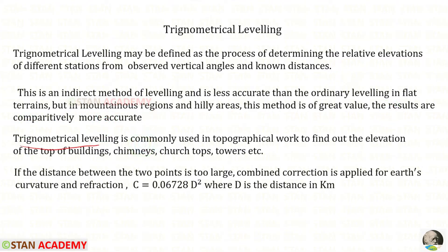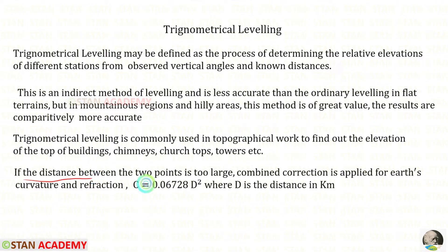Trigonometrical leveling is commonly used in topographical work to find out the elevation of the top of buildings, chimneys, church tops, towers, etc. If the distance between the two points is too large, we need to apply a combined correction for the earth's curvature and refraction. In this correction, d is the distance in kilometers.